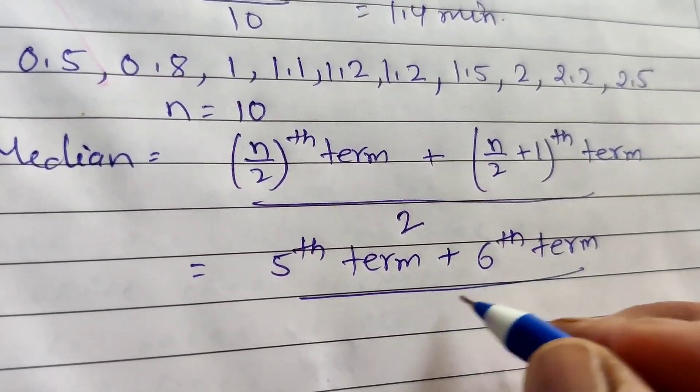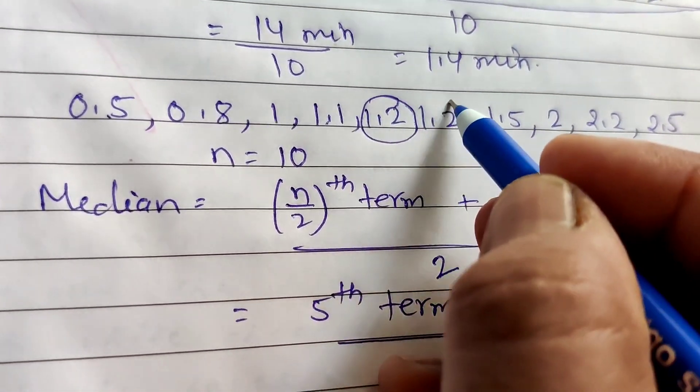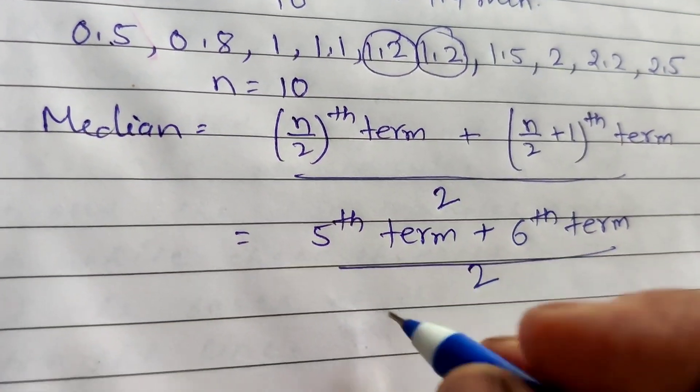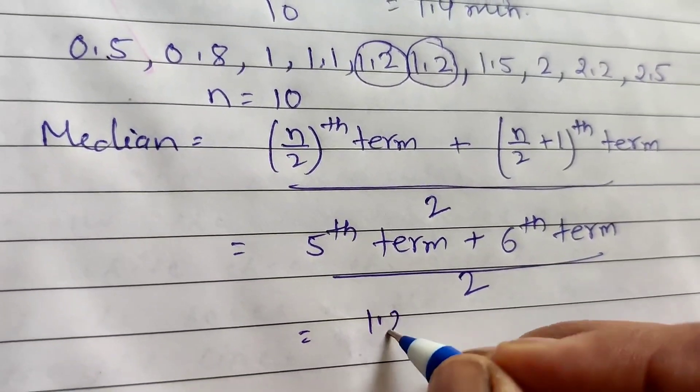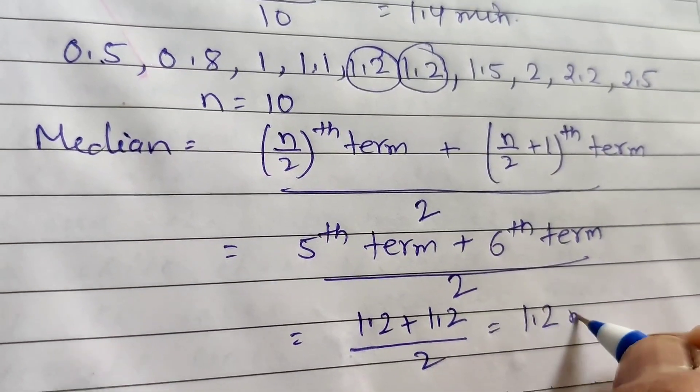Here n equals 10, it means fifth term and sixth term divided by 2. Now the fifth term is 1, 2, 3, 4, 5 - fifth term is 1.2. Sixth term is also 1.2. So 1.2 plus 1.2 divided by 2 equals 1.2 minutes.